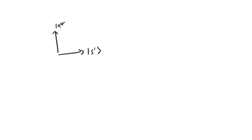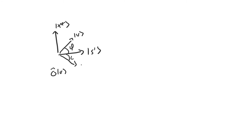The behavior of O is easy to understand. Let's say we have an arbitrary vector v in the s-prime x-star plane, defined by angle phi from s-prime. Then O acting on v reflects v about s-prime, because we're just negating the x-star component of v. So now we have a vector at angle phi below s-prime.